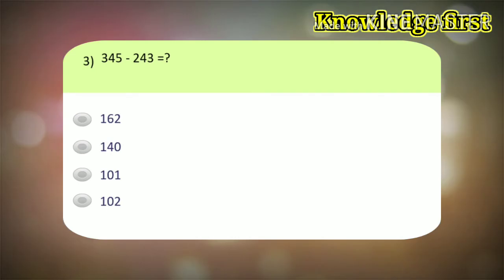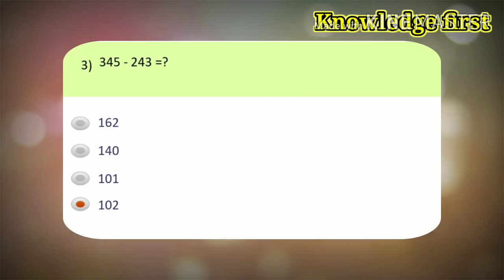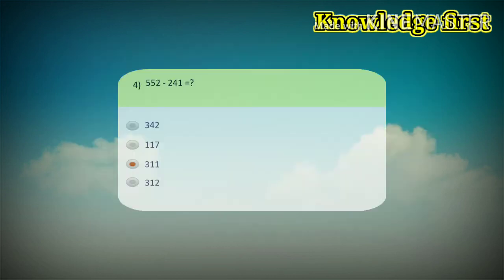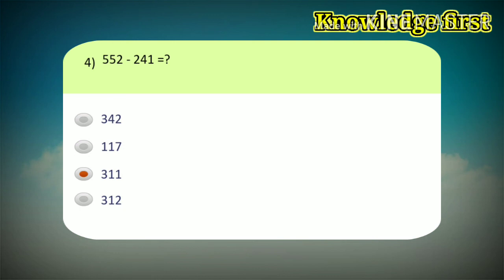Third example, 345 minus 243. Correct answer is 102. Fourth example, 552 minus 241. Correct answer is 311.